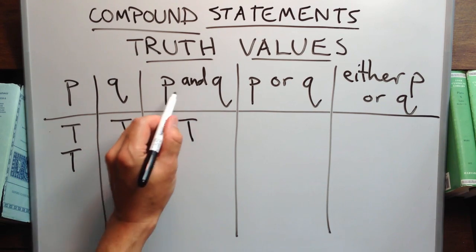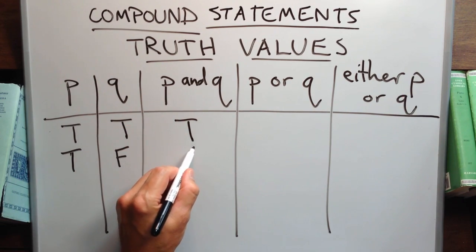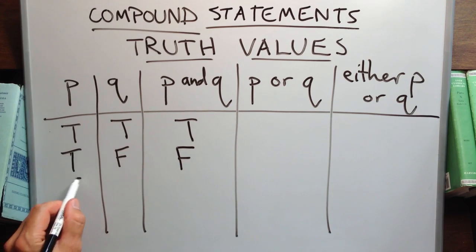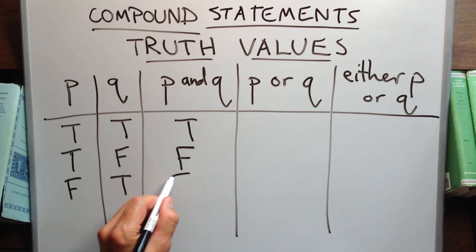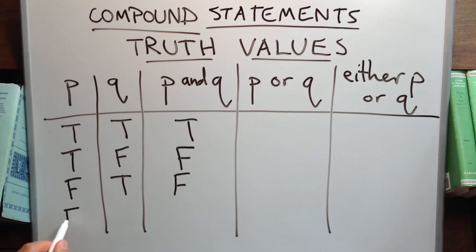If, however, Amy were not singing or Ted were not dancing, then the conjunction would be false. It would also be false if neither Amy were singing nor Ted were dancing.